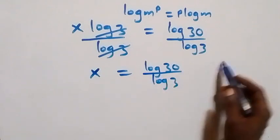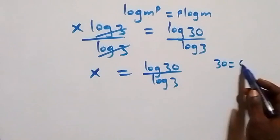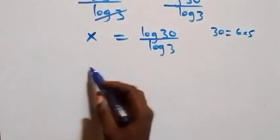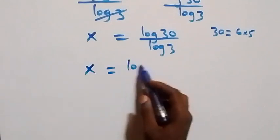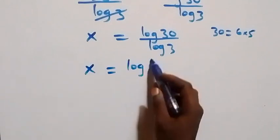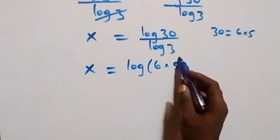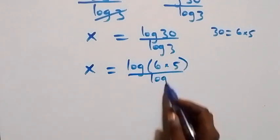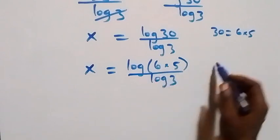Our next step: we write 30 as 6 times 5. So what we have becomes x equals log(6 times 5) over log 3.